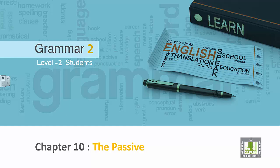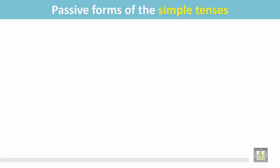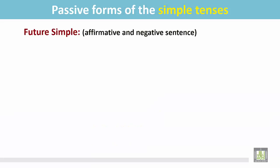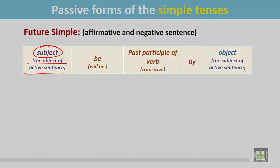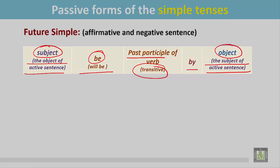Grammar 2 for Level 2 students, Chapter 10: the passive. Passive forms of the simple tenses — future simple affirmative and negative sentence. See the structure: the subject is the object of an active sentence, the be verb 'will be', after that the transitive verb in the past participle form, the preposition 'by', and finally the object — the subject of the active sentence.